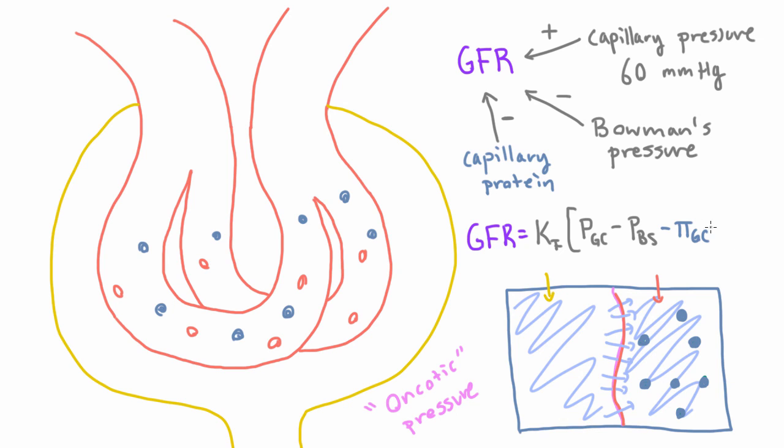And then technically we add this term plus the oncotic pressure of Bowman's space. And the reason we add that is that technically if you had proteins out here in Bowman's space, they would drag more fluid into Bowman's space and increase your GFR. But normally you don't, you shouldn't, so normally this term would be zero.